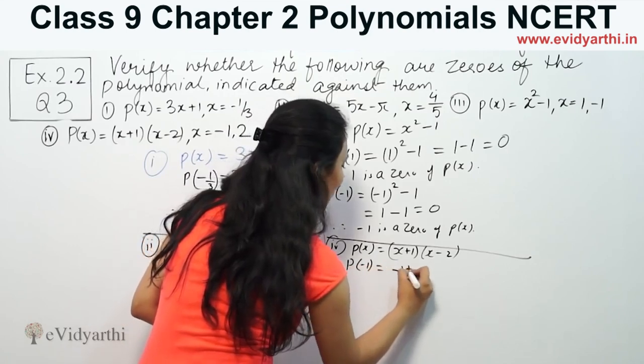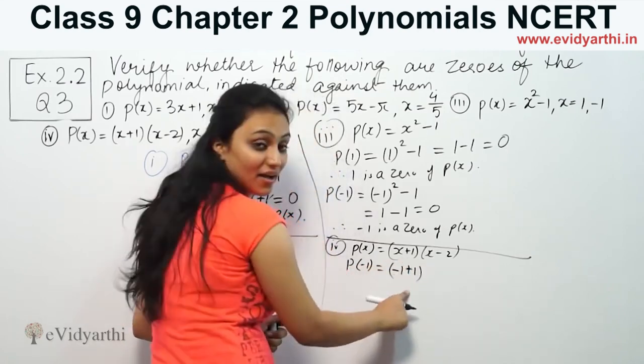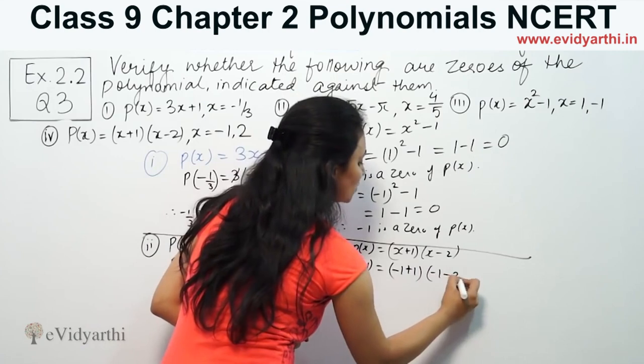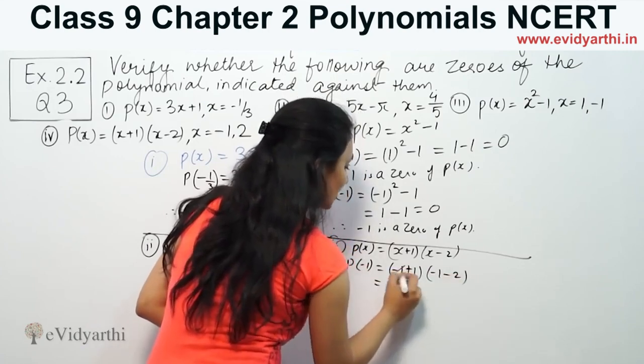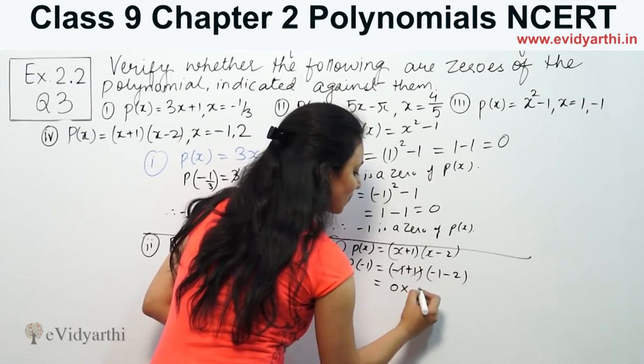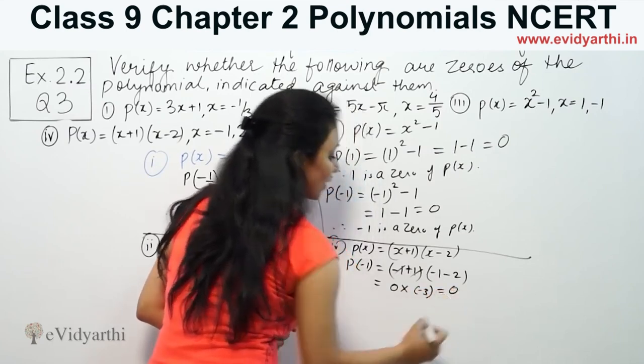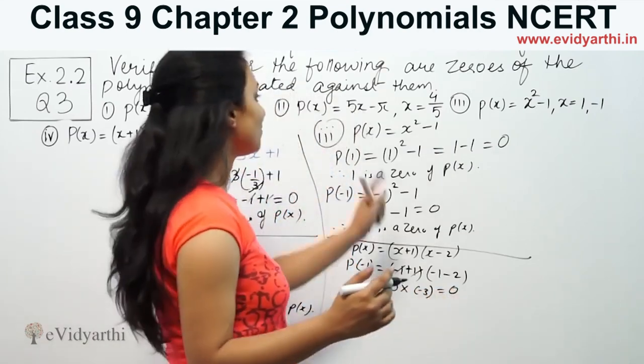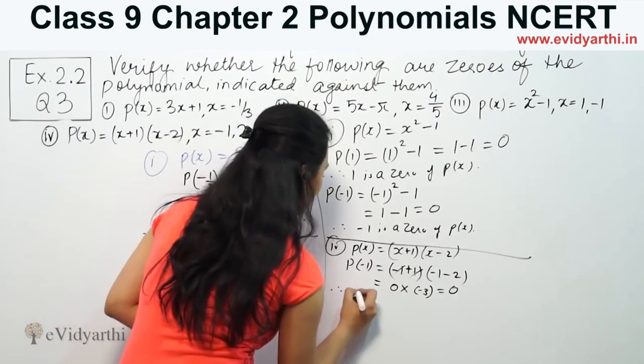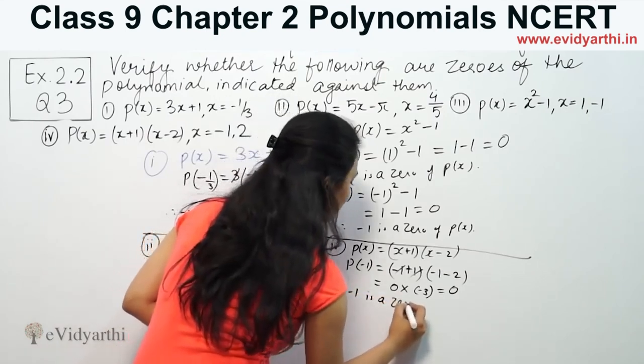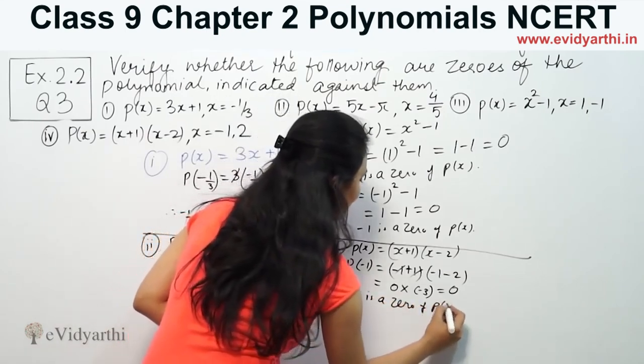P(-1) = (-1+1)(-1-2) = (0)(-3) = 0. Since the answer is 0, that means -1 is a zero of P(x).